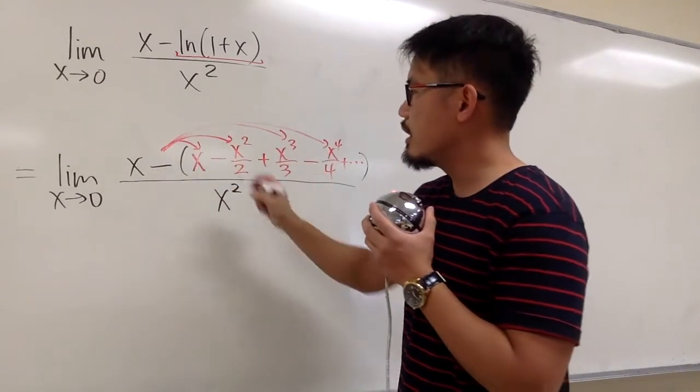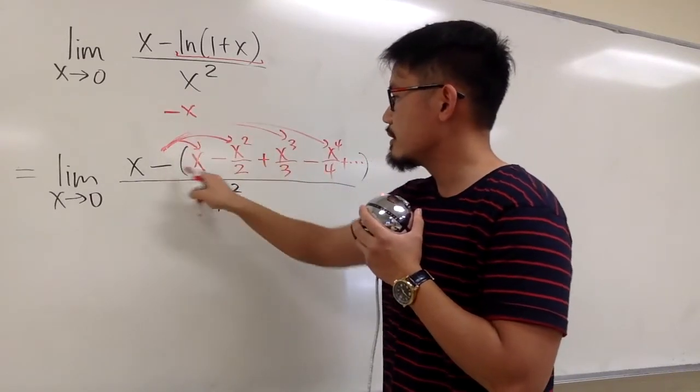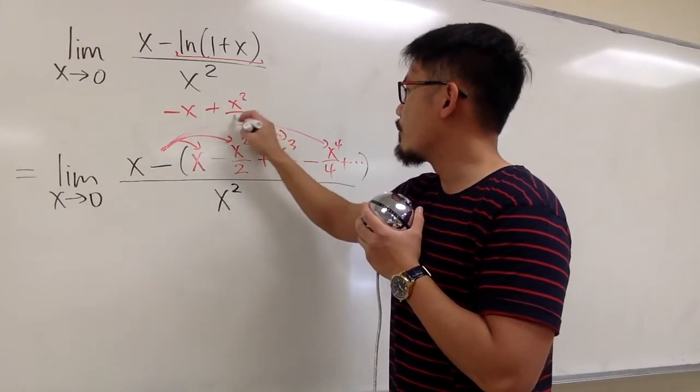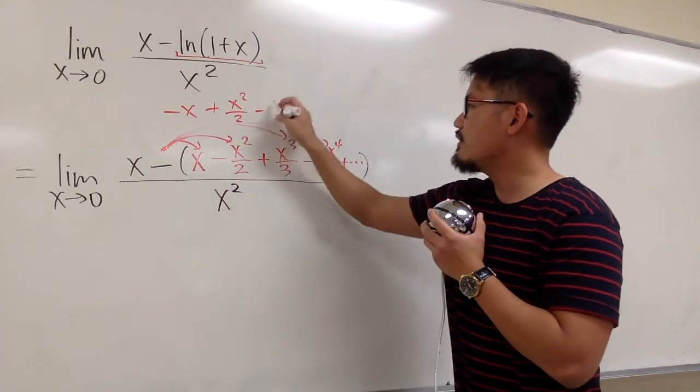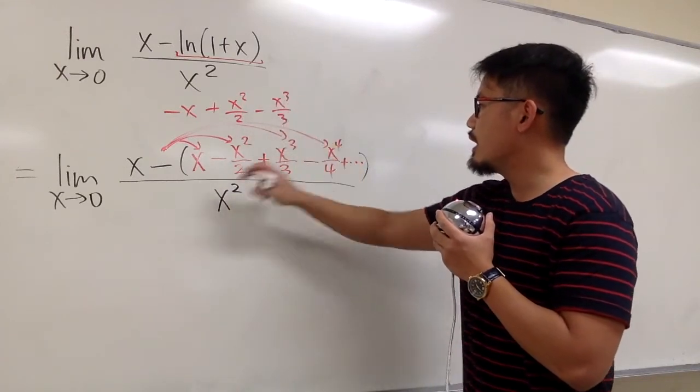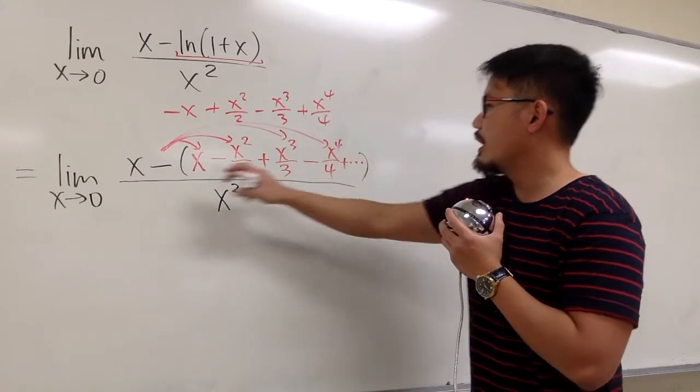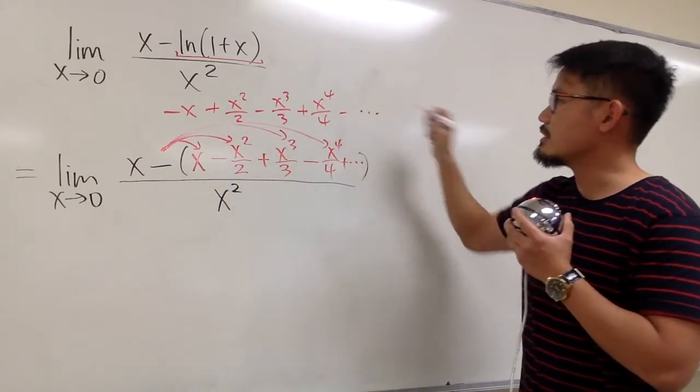So I would like to show you if we distribute this negative sign into the parentheses. Let's do that carefully. We have -x, then +x²/2, then -x³/3, then +x⁴/4, and the next one is going to be minus, and so on.